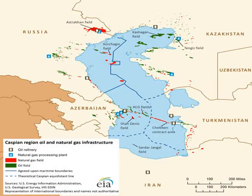The border starts in the north at the tripoint with Turkey on the Araks River and proceeds overland in a southeasterly direction along various mountain ridges, such as the Zangezur Mountains, down to the western tripoint with Iran on the Araks. Additionally, the Azerbaijani exclave of Karki lies just north of the border.